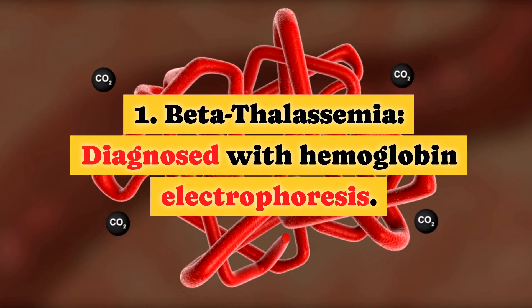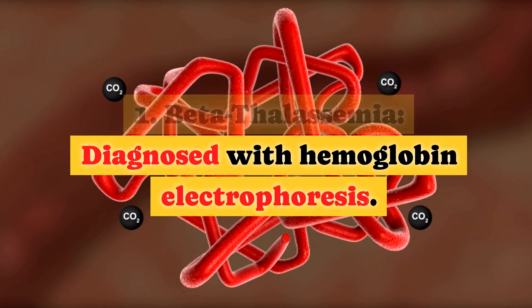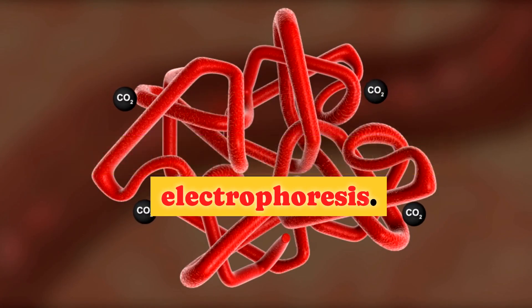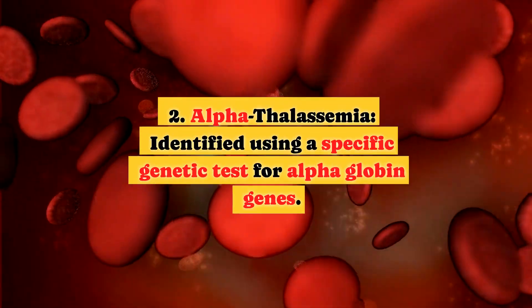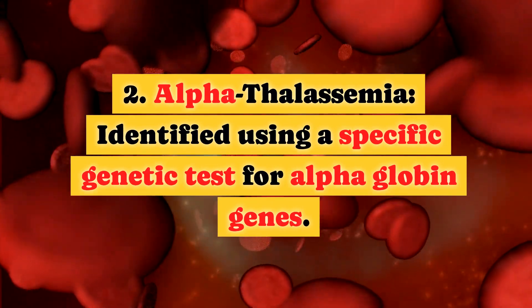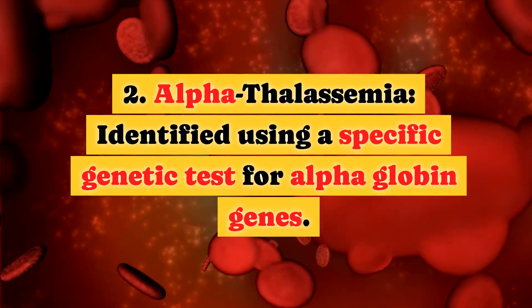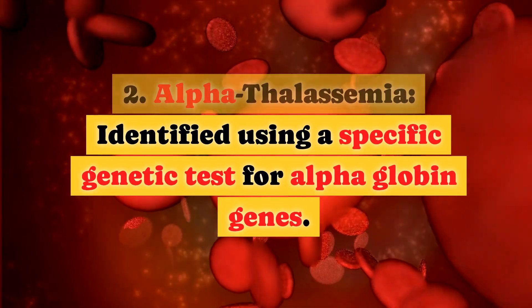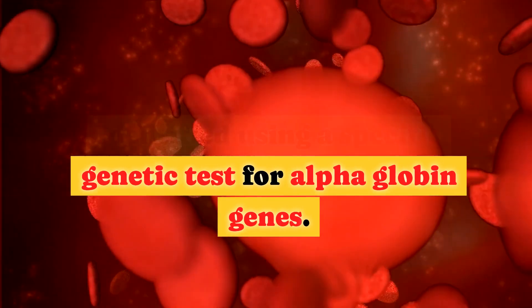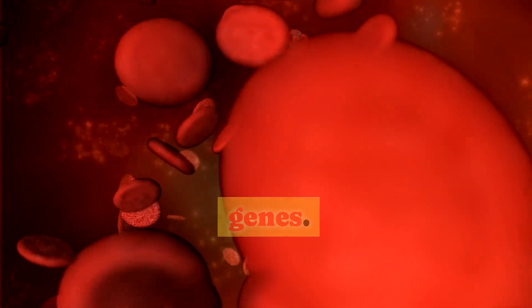Diagnostic steps: Beta-thalassemia is diagnosed with hemoglobin electrophoresis. Alpha-thalassemia is identified using a specific genetic test for alpha-globin genes.